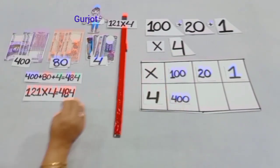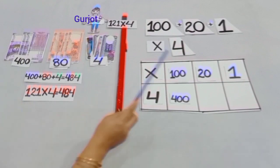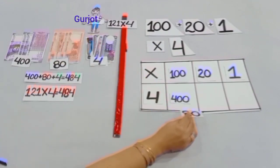And students, yesterday we had 4 notes of Rs. 20. That means Rs. 80. And today, when we will multiply 20 by 4, we will get 80.